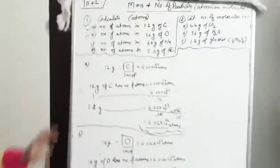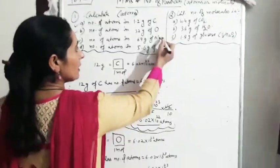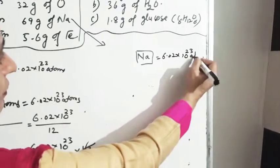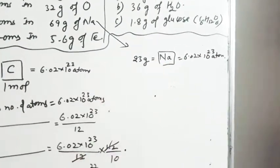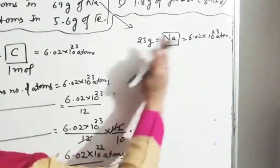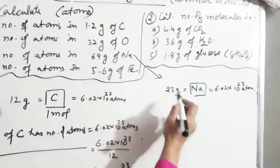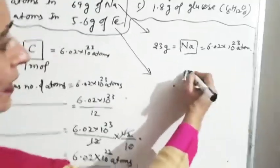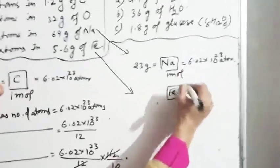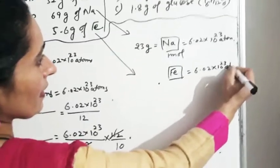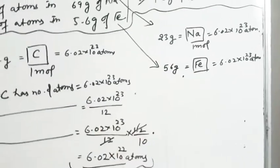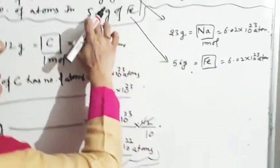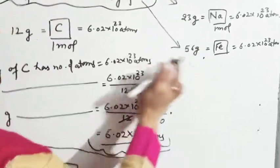इस तरीके से हम इनको solve करेंगे. अब अगले दो questions — मैं सिर्फ hint दूँगी. Sodium के लिए center में sodium लिखेंगे. इसके अंदर 6.02 × 10²³ atoms और sodium का atomic mass 23 grams. तो 23 grams के अंदर number of atoms इतनी, 1 gram में divide by 23, और 69 gram of sodium में आप solve करके भेजेंगे. Iron के लिए center में iron लिखेंगे. Iron का atomic mass 56 gram. 56 gram of iron has इतनी atoms, 1 gram में कितनी होंगी, and 1.6 gram के अंदर कितनी होंगी — दोनों को solve करके मेरे पास भेजना है.